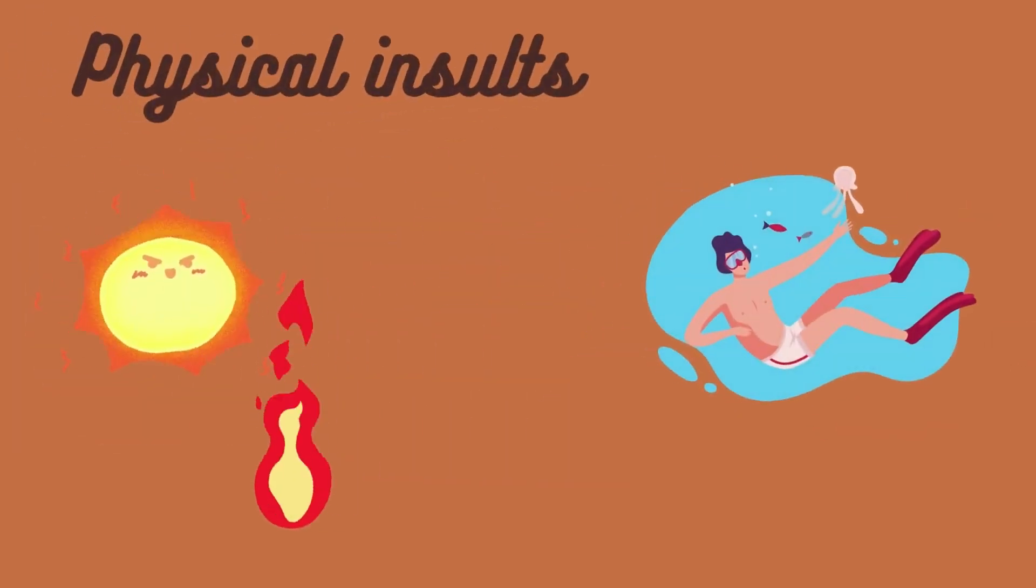Now if you are wondering what are some types of the disturbances we are talking about, we have for example the physical insults like the intense heat of a fire or during summer, or the lack of oxygen when you're under the water.